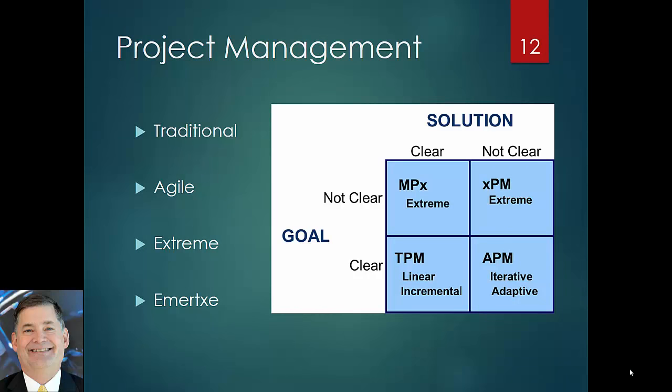When you look at project management, there are four different approaches ongoing right now: traditional, agile, extreme, and emergency. You can distinguish between the four based on whether you have a clear understanding of the goal and whether you have a clear understanding of the solution. If you build a little matrix and map those across, you'll use traditional project management — covered in the book — when you have a clear goal and a clear solution. There are lots of different techniques for deploying that, two of which are linear and incremental.